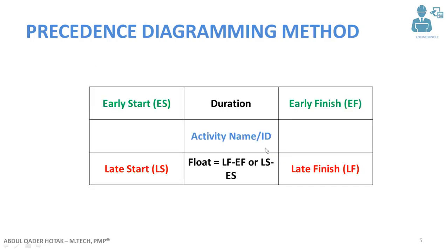In PDM, we show each activity in a node. We have the activity name or ID, the early start (the earliest possible we can start the activity), the early finish (the earliest we can finish the activity), and the duration in the middle. We also have the late start (the activity could be started no later than this date), the late finish, and the float. The formula for float is: late finish minus early finish, or late start minus early start. Early finish is calculated by adding the duration plus the early start value.